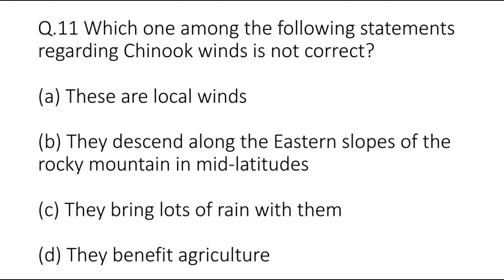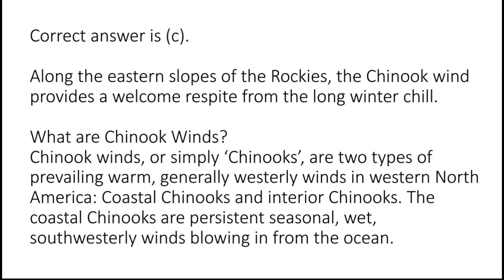Question 11: Which one among the following statements regarding Chinook winds is not correct? Options are A: these are local winds, B: they descend along the eastern slopes of the Rocky Mountains in mid-latitudes, C: they bring lots of rain with them, or D: they benefit agriculture. The correct answer is C. Along the eastern slopes of the Rockies, the Chinook winds provide a welcome respite from the long winter chill. Chinook winds are two types of prevailing warm, generally westerly winds in western North America — coastal Chinooks and interior Chinooks. The coastal Chinooks are persistent, seasonal, wet, southwesterly winds blowing in from the ocean.